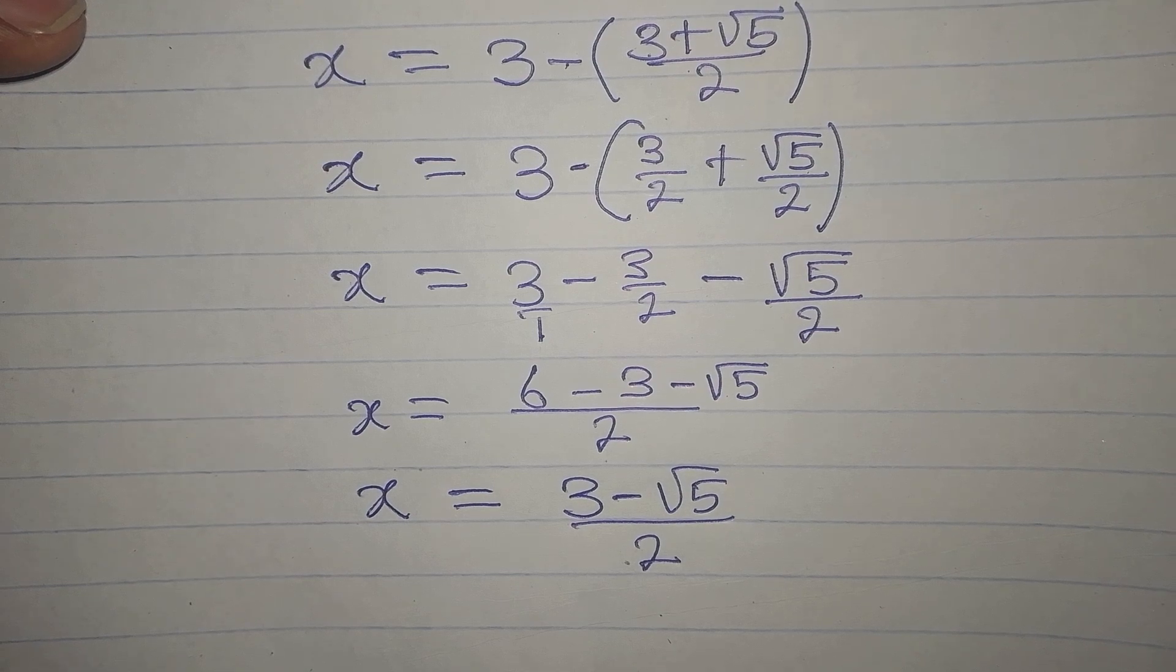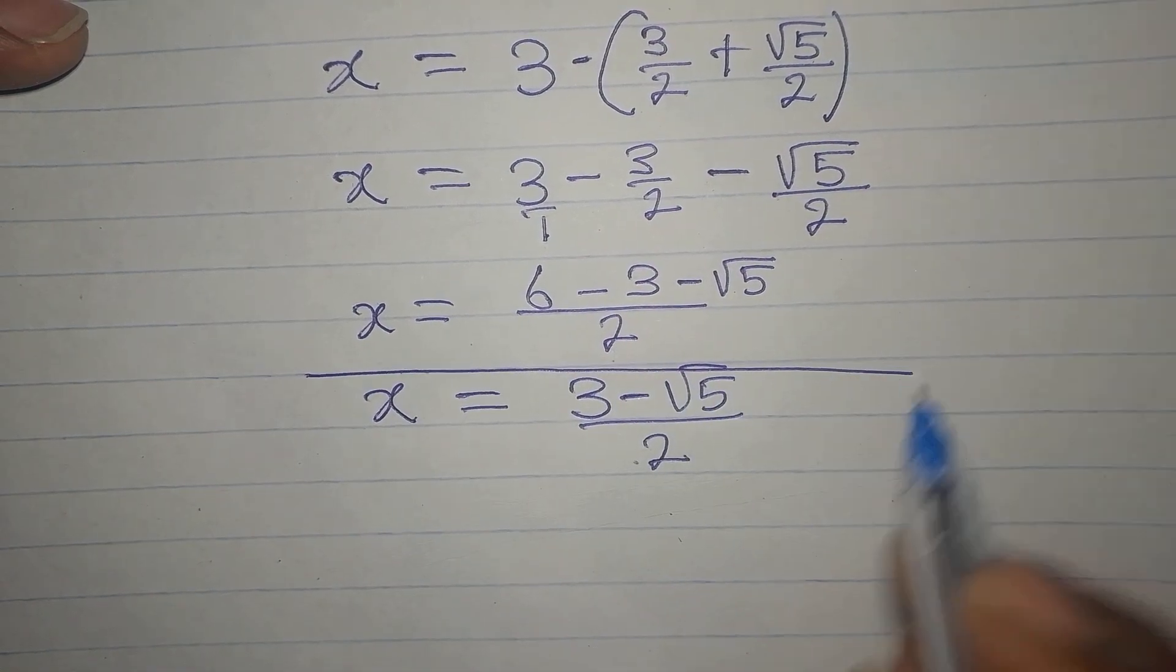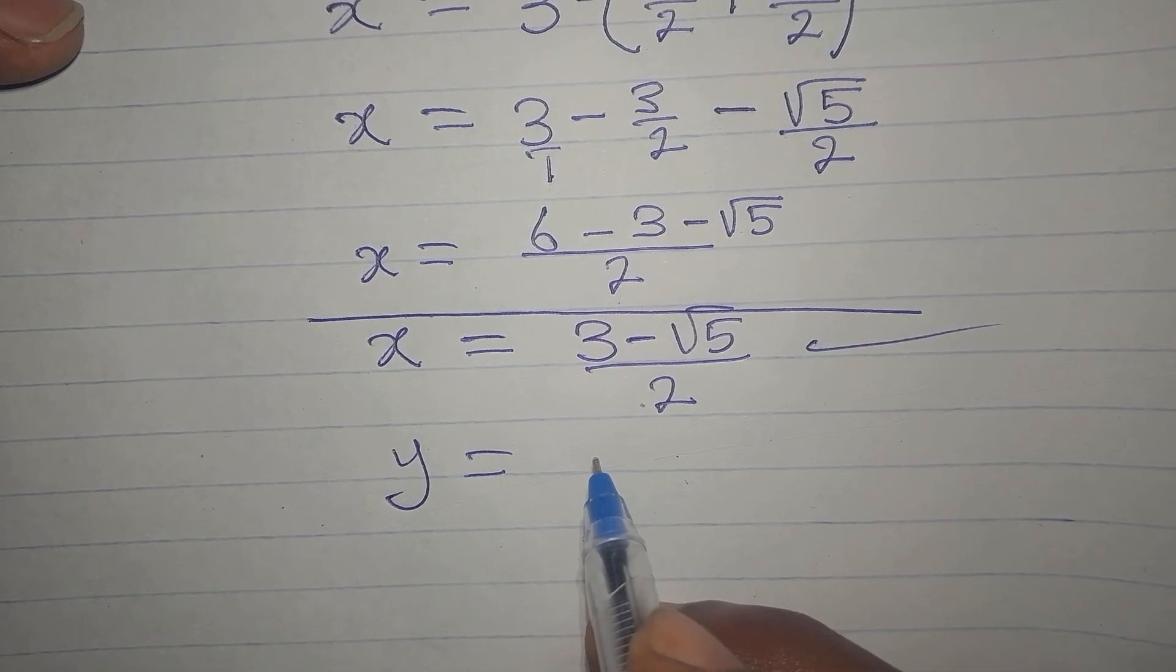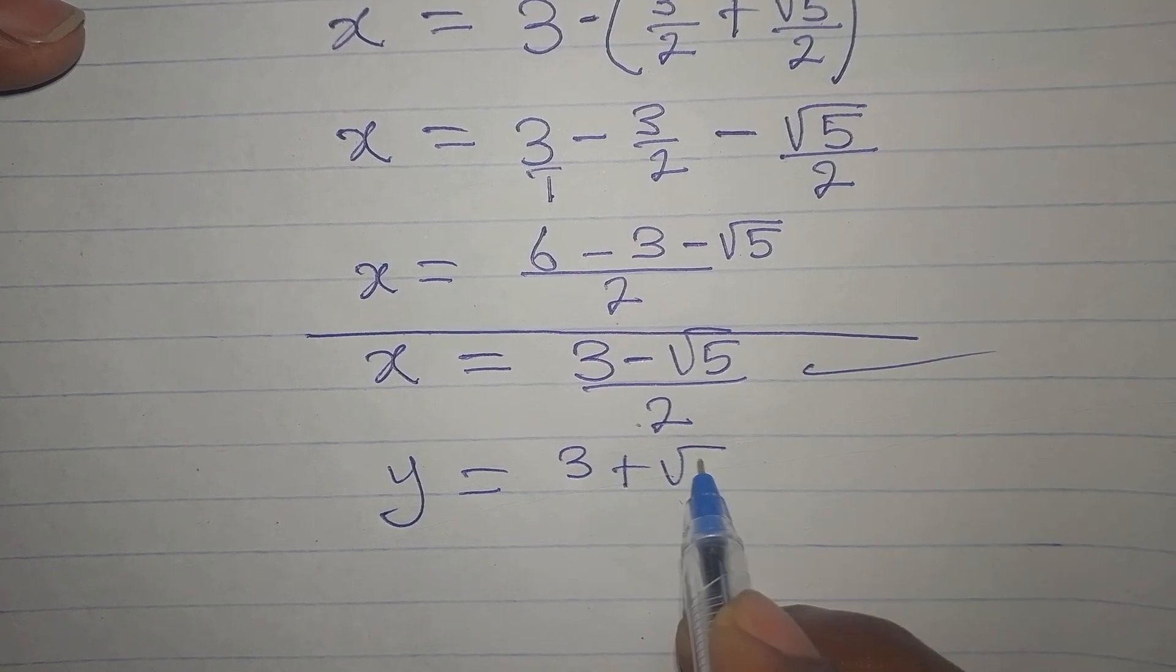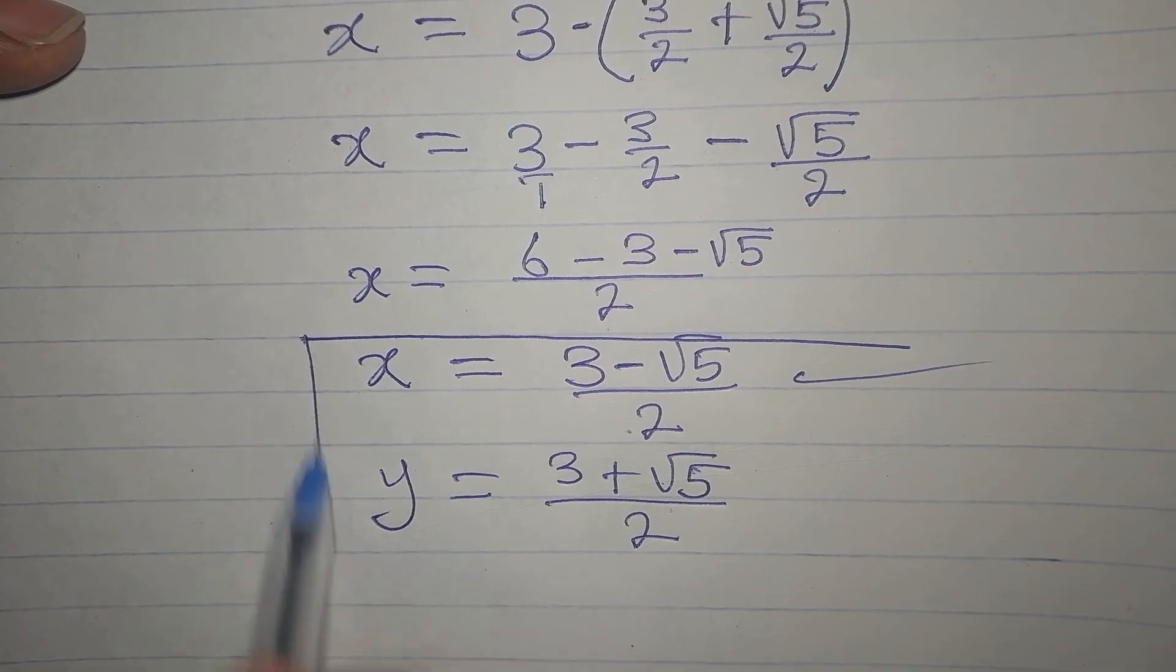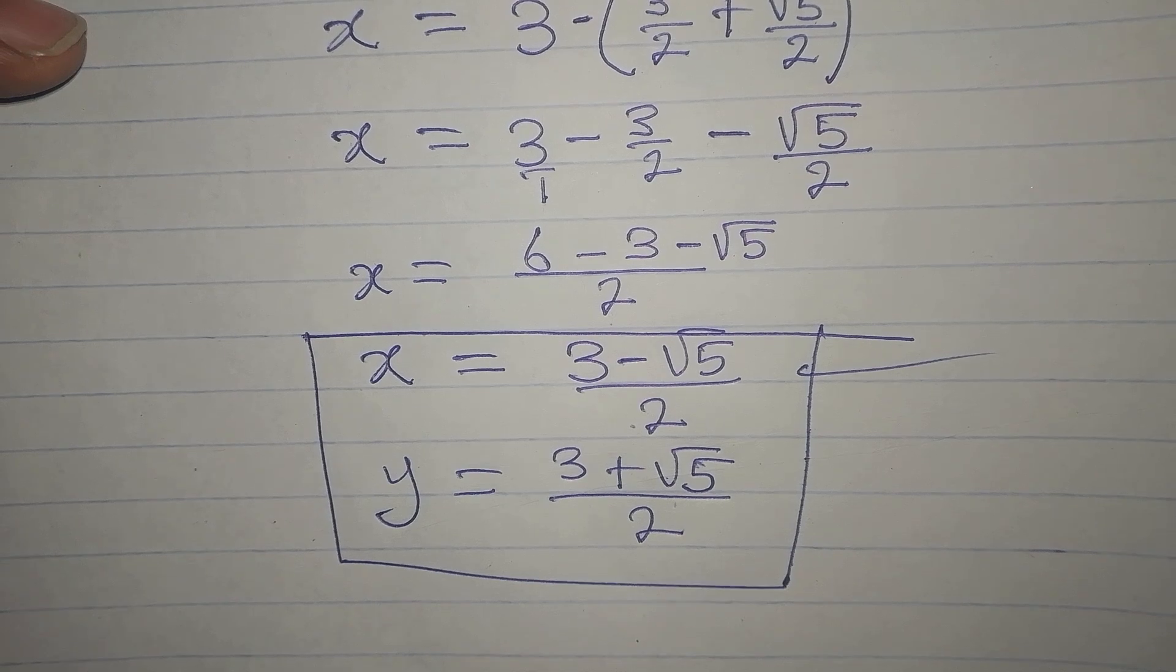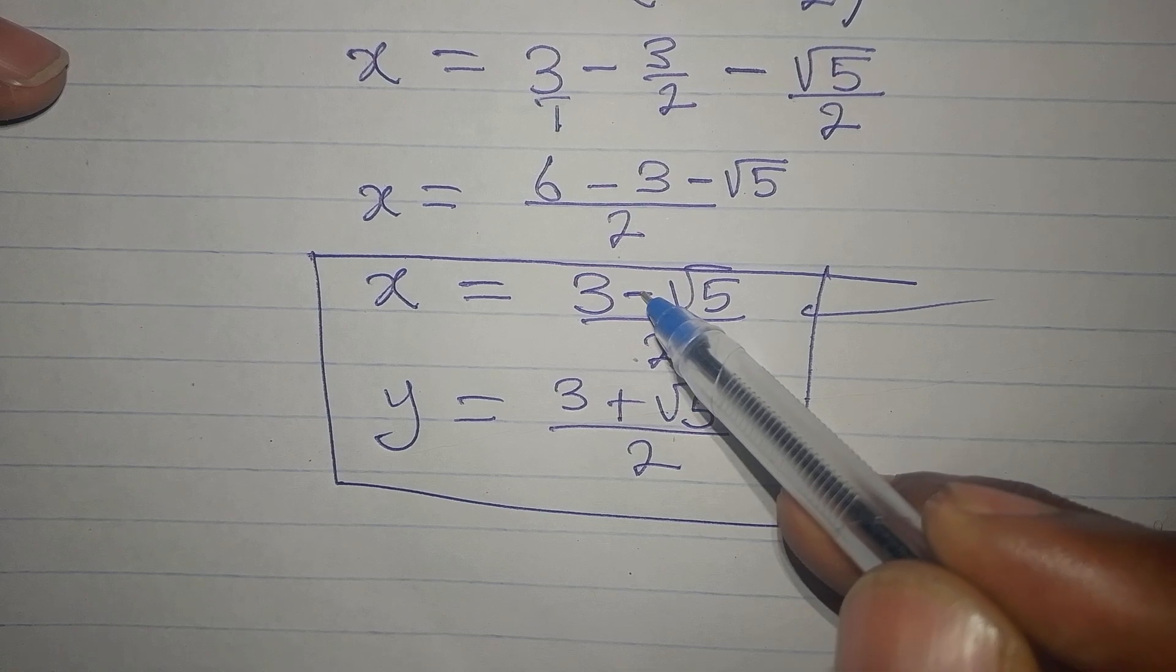And this is over 2. Now we get the solution at this point. If x is this, then y that we got before is 3 plus root 5 over 2. So when x is this value, y is this value. And if you look at the two of them very well, you will see that they are almost the same except the negative and the positive.